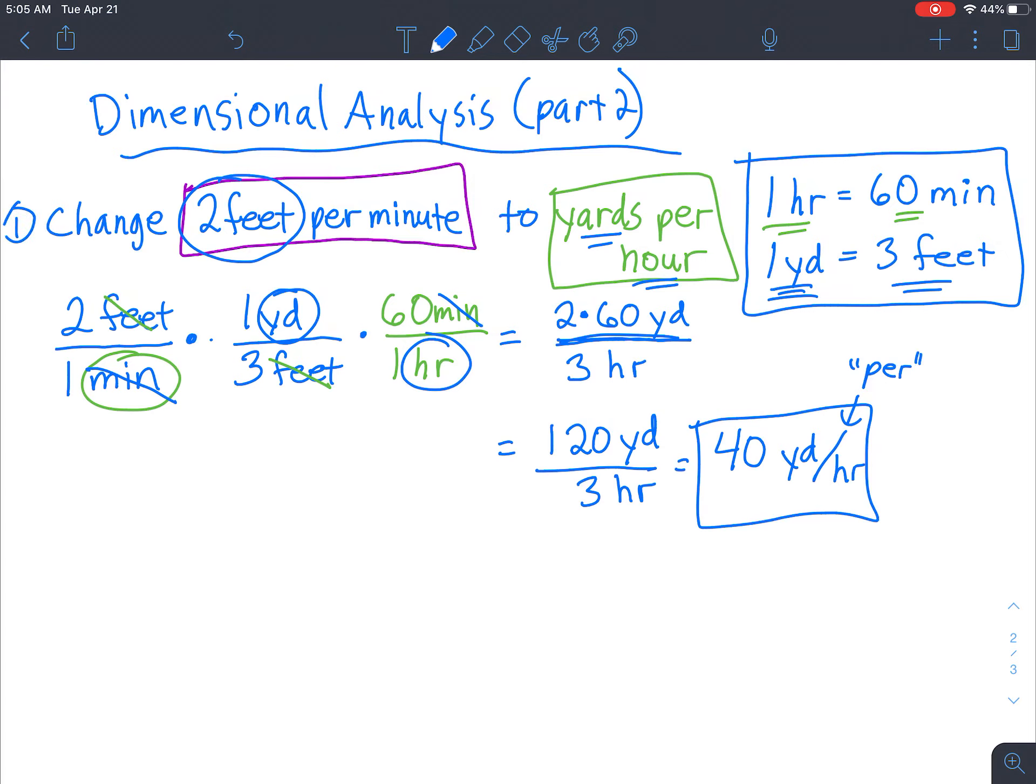For example number 2, we're going to change. So this person works a little faster. And they can complete 3 feet per minute. And we're going to change that to yards per hour once again.